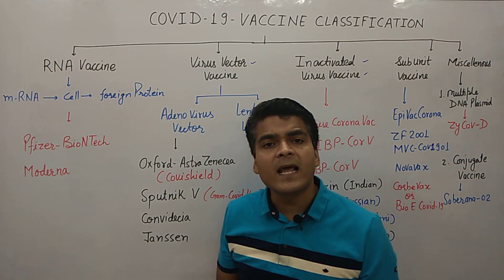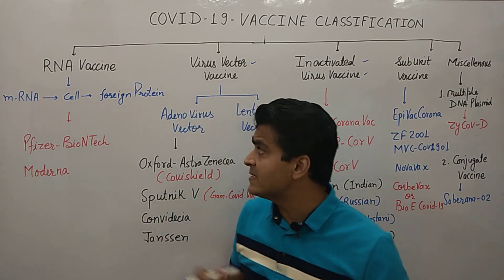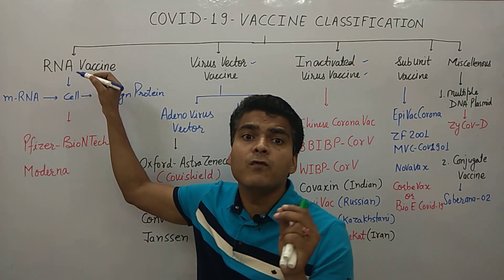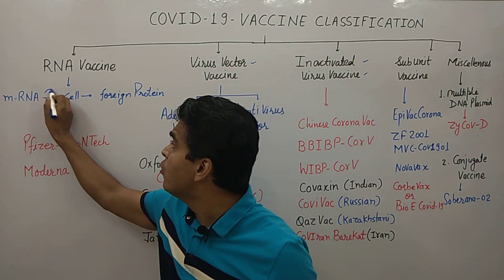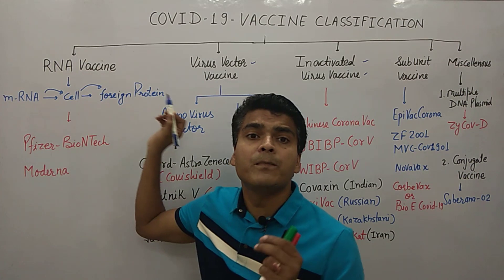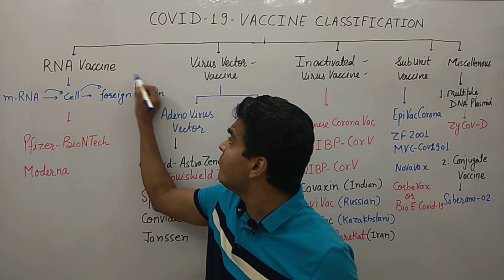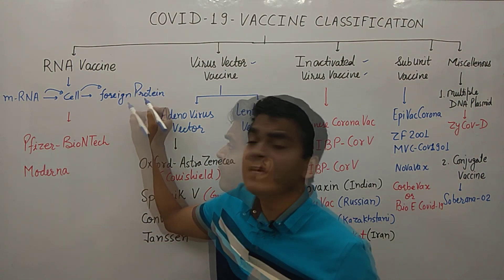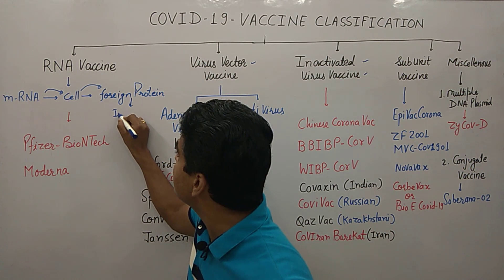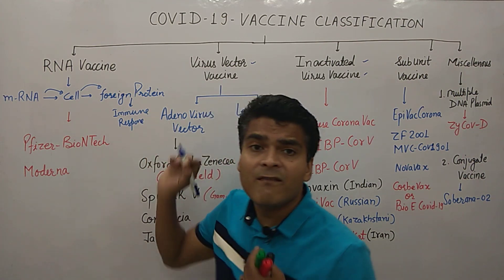First, let's understand what an RNA vaccine is. In RNA vaccines, scientists take the mRNA of the coronavirus, and that mRNA moves into the cell. The cell then produces a foreign protein, which — when introduced into the human body as a vaccine — induces an immune response.